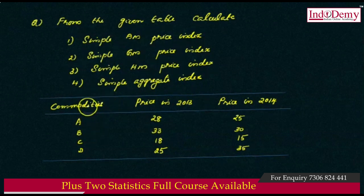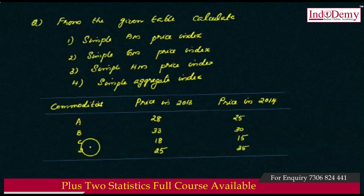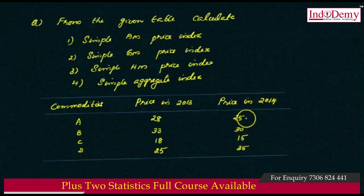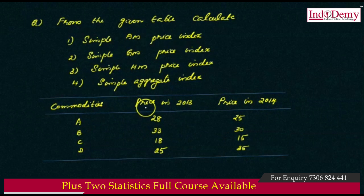We have 4 commodities: A, B, C, and D. Price in 2013: 28, 33, 18, and 25. Price in 2014: 25, 30, 15, and 35. Now let's calculate the data.